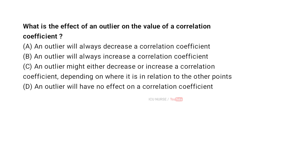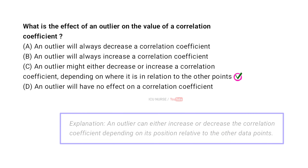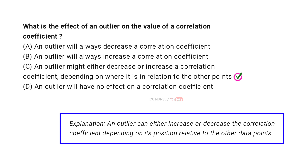What is the effect of an outlier on the value of a correlation coefficient? A: An outlier will always decrease a correlation coefficient. B: An outlier will always increase a correlation coefficient. C: An outlier might either decrease or increase a correlation coefficient depending on where it is in relation to the other points. D: An outlier will have no effect on a correlation coefficient. The correct answer is C. An outlier can either increase or decrease the correlation coefficient depending on its position relative to the other data points.